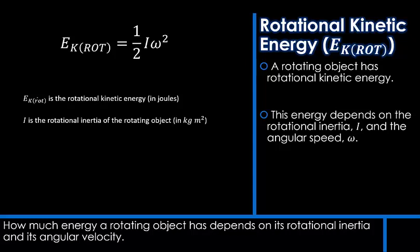The rotational inertia is I, measured in kilogram meters squared, and omega is the angular velocity of the rotating object in radians per second.